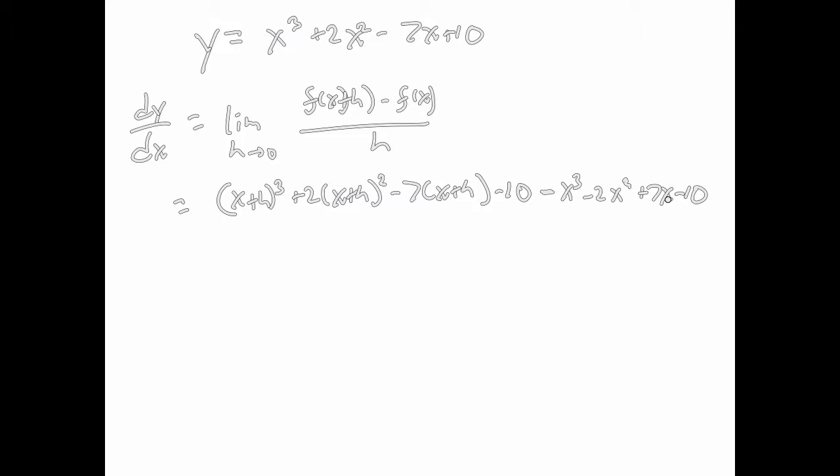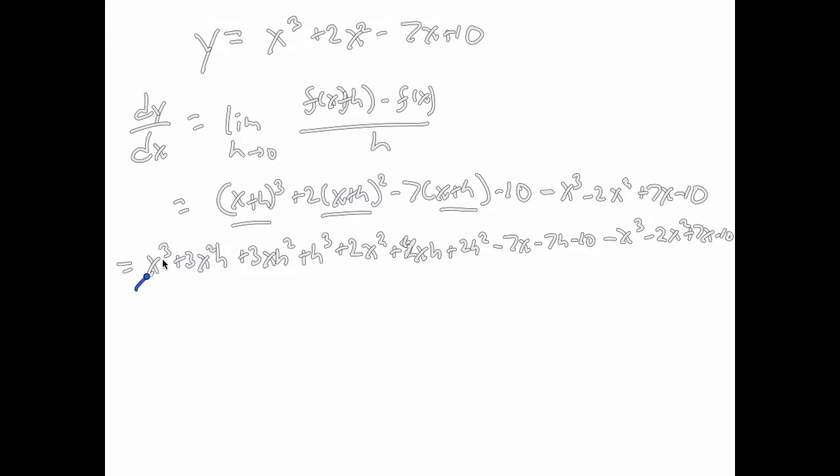Now, what's going to cancel? Well, the first term of each of these expansions is going to cancel with these terms. So we get x³ + 3x²h + 3xh² + h³ + 2x² + 4xh + 2h² - 7x - 7h - 10 - x³ - 2x² + 7x - 10. Let's start canceling in a different color.